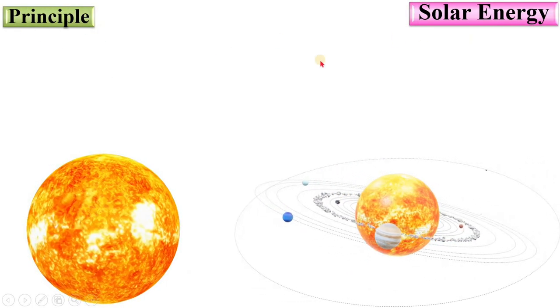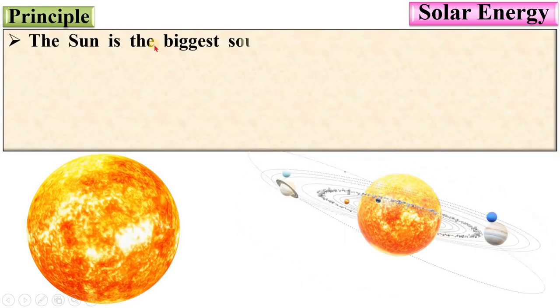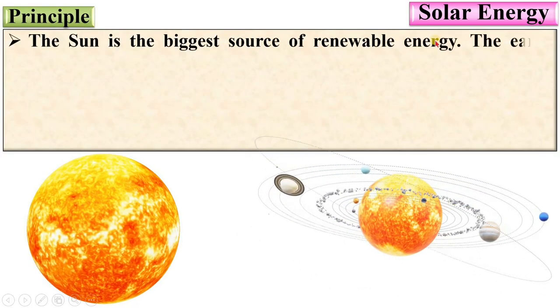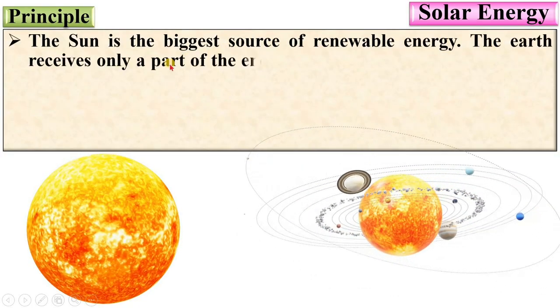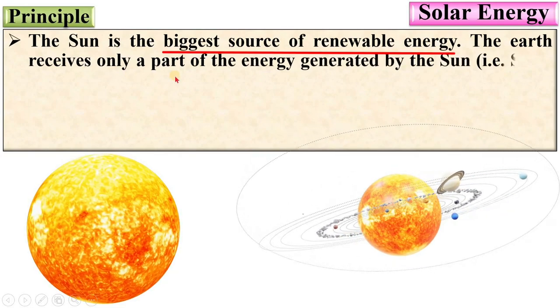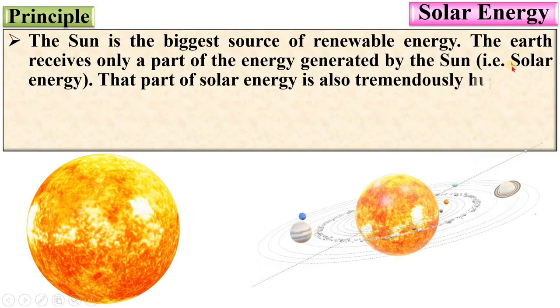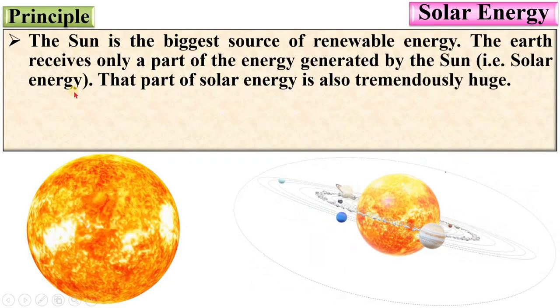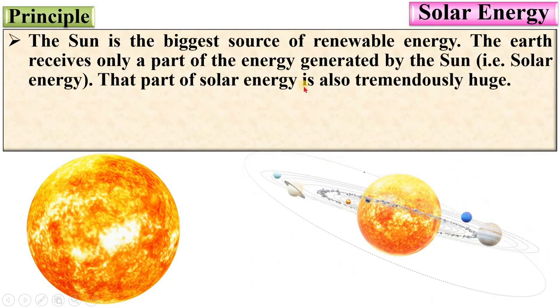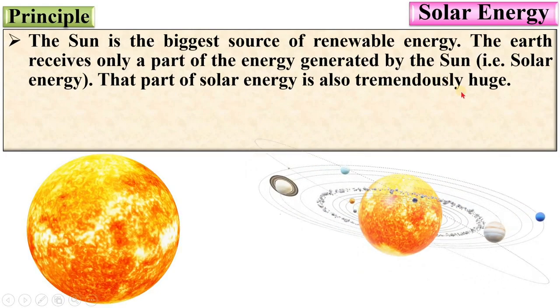Let us start with the principle of solar energy. The sun is the biggest source of renewable energy. The earth receives only a part of the energy generated by the sun. That is solar energy. That part of solar energy is also tremendously huge.